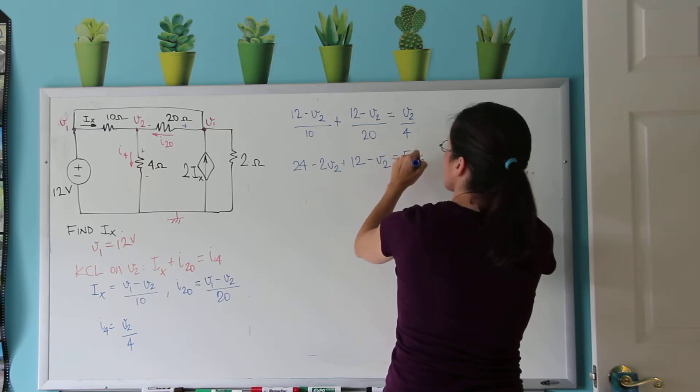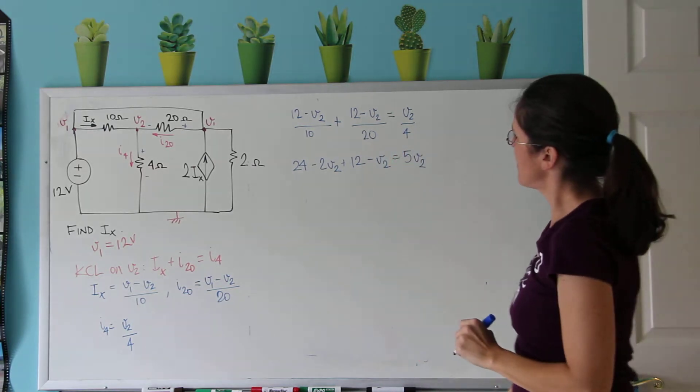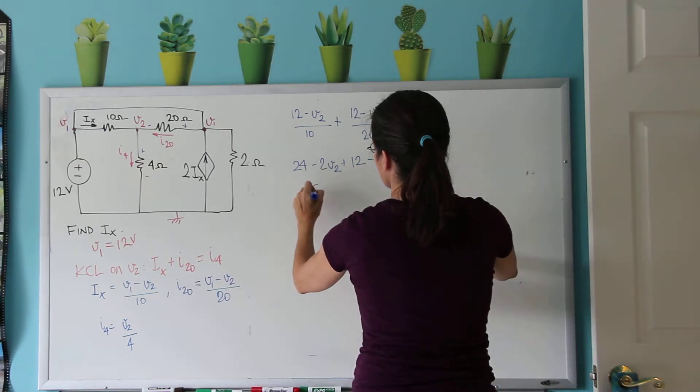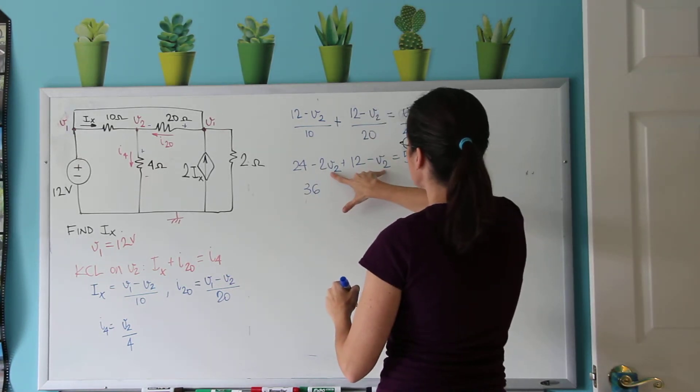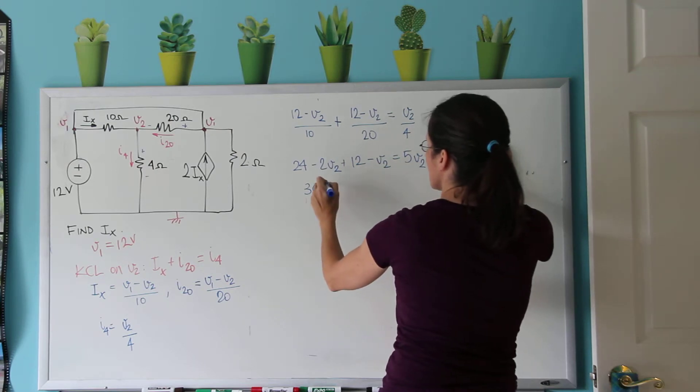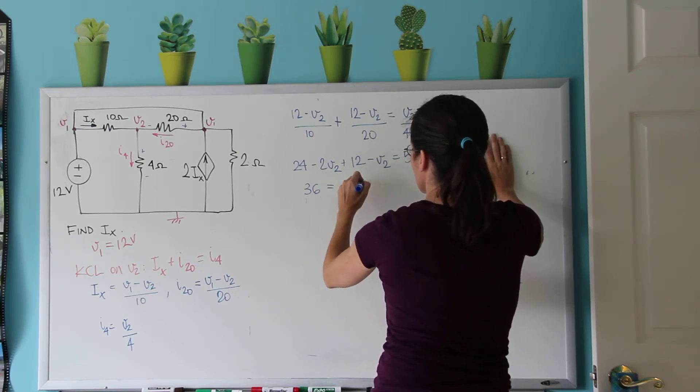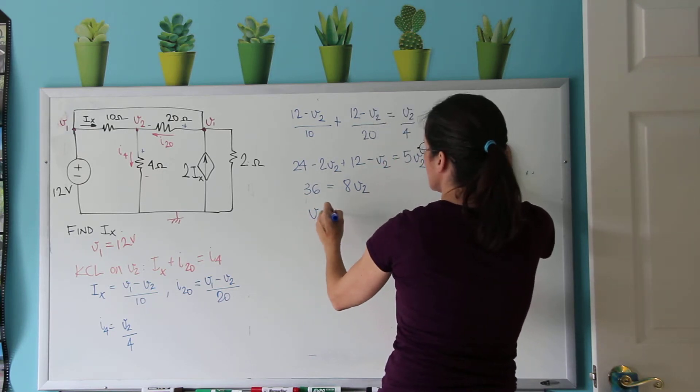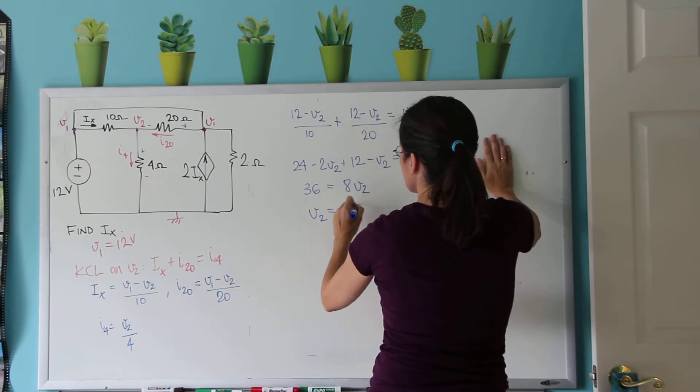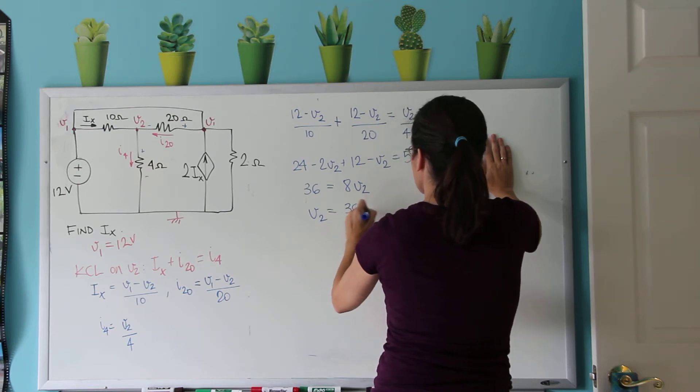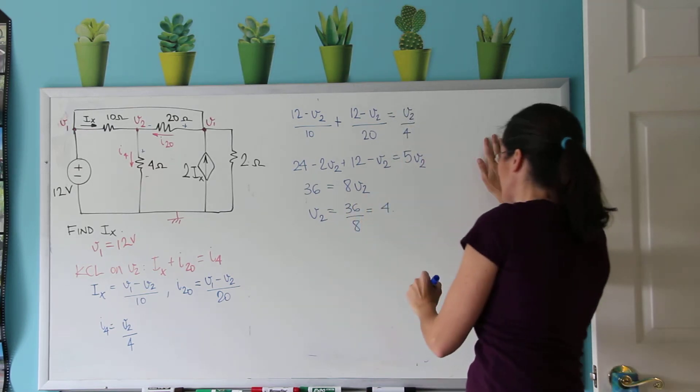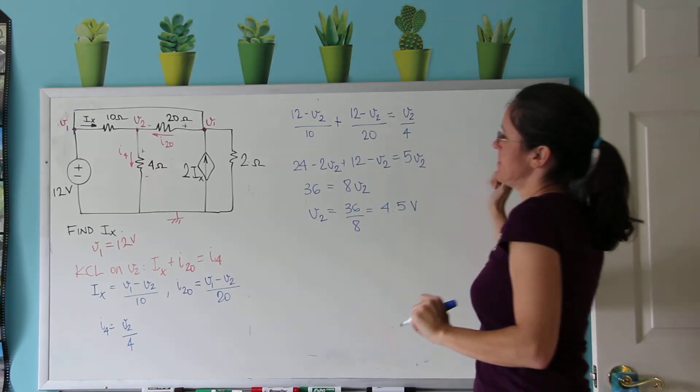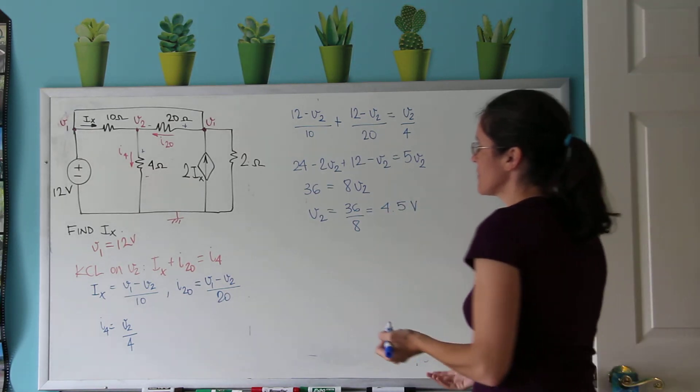I hope I got this right. Now, 24 plus 12 is 36. Minus 3V2 I'm going to put on this side is going to be 8V2. So V2 is 36 divided by 8, which is 4.5 volts.